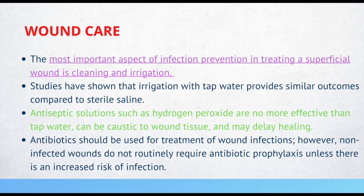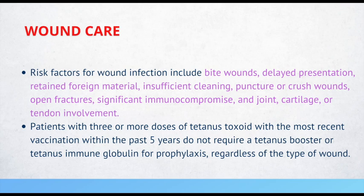Additional risk factors for wound infection include retained foreign material, insufficient cleaning, puncture or crush wounds, open fractures, significant immunocompromise, and joint, cartilage, or tendon involvement. Patients with three or more doses of tetanus toxoid with the most recent vaccination within the past five years do not require a tetanus booster or tetanus immune globulin for prophylaxis, regardless of the type of wound.